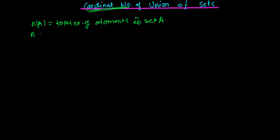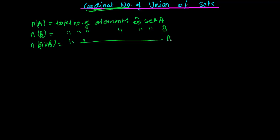Similarly, if I am writing the cardinal number of set B, it means the total number of elements present in set B. Similarly, if I am writing cardinal number of A union B, it means the total number of elements in the set A union B. And if I am writing cardinal number of A intersection B, it means the total number of terms in set A intersection B.